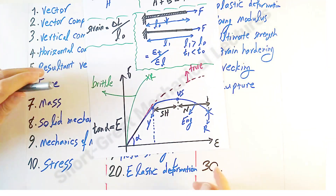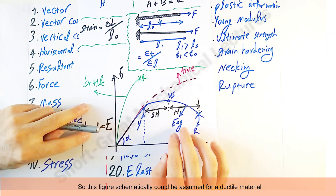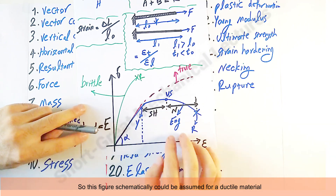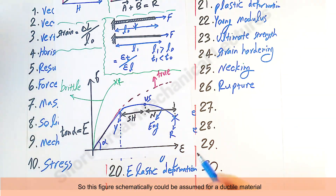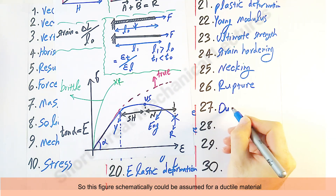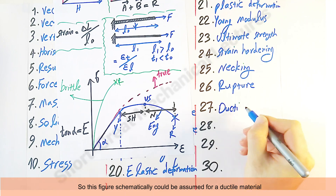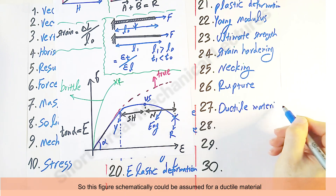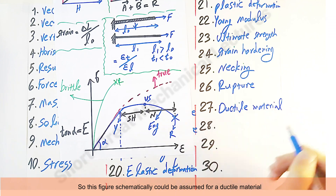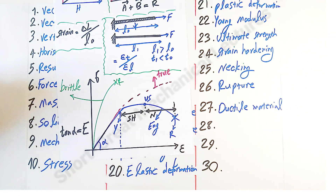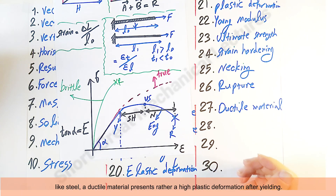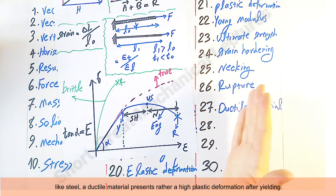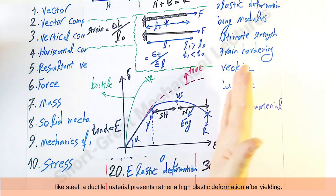This figure schematically represents a 'ductile material' — a ductile material shows significant plastic deformation after yielding.